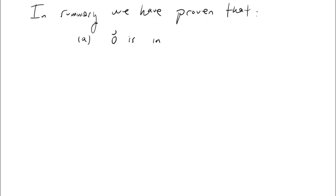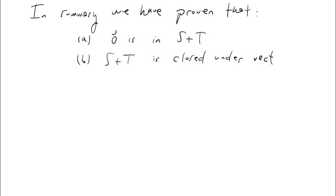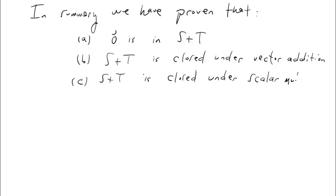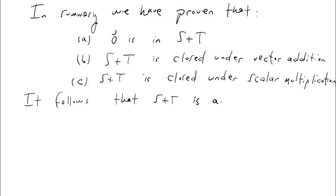Let's summarize what we've shown. A: zero is in S plus T. B: S plus T is closed under vector addition. C: S plus T is closed under multiplication by scalars. It follows that S plus T is a subspace of our vector space V. QED — that's what we set out to prove. The proof is complete.